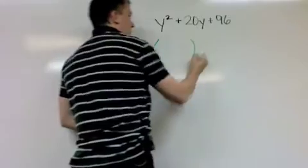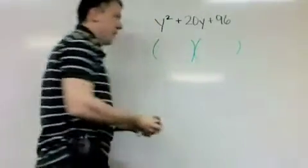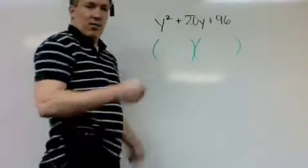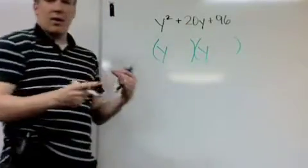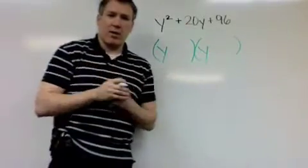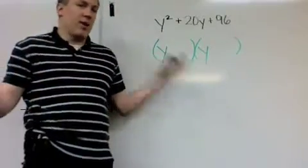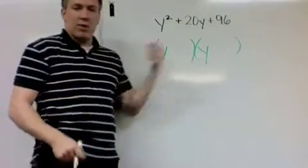First, just write two parentheses. And second, just write whatever the variable is, y and y inside in the first place in both of those parentheses. So that's my first step. I am almost done. I only need two more things.